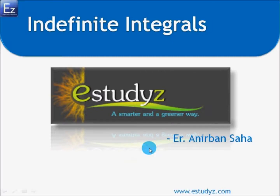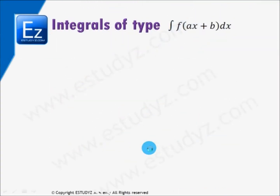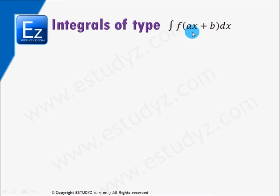Welcome back to e-studies.com. In this lecture, we are going to solve a few types of integrals. The first type is the integral of f(ax + b) dx. If you look at the integration, we don't have a function of a variable — we have a function of an expression. It's very straightforward; we just have to put the expression as another variable. This method is known as substitution.